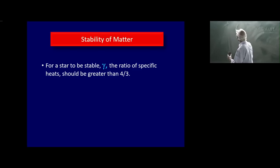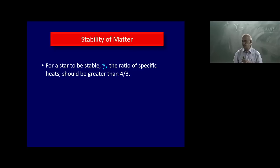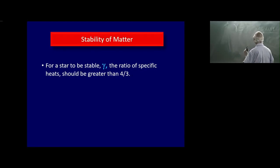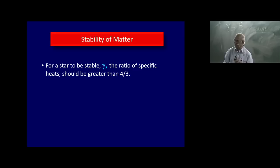That translates to the following criterion: for a star to be stable, gamma — the ratio of specific heat at constant pressure to specific heat at constant volume, Cp/Cv — should be greater than 4/3. The stability criterion in Newton's theory of gravity requires gamma greater than 4/3. If gamma is less than 4/3, the compressibility will be negative — the star will spontaneously collapse. I leave this as an exercise: compare the adiabatic pressure increase with the gravitational pressure increase as you compress the star.